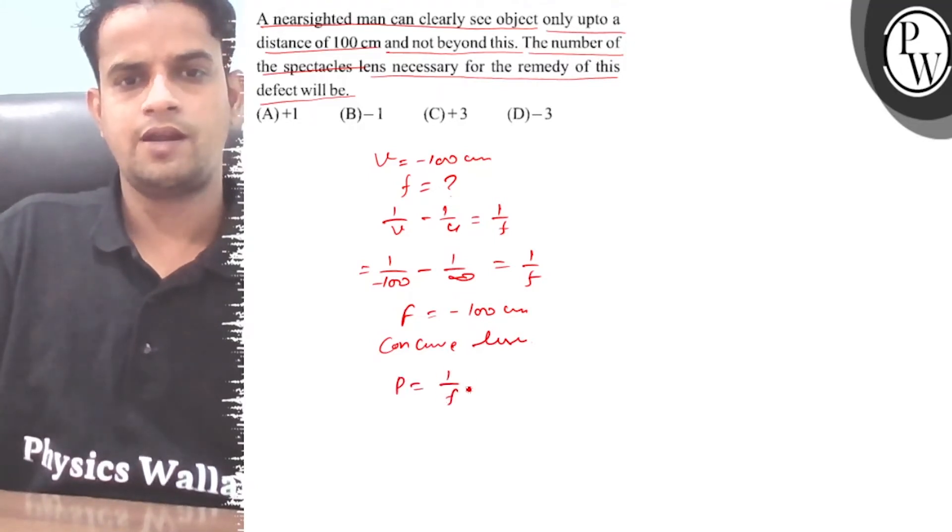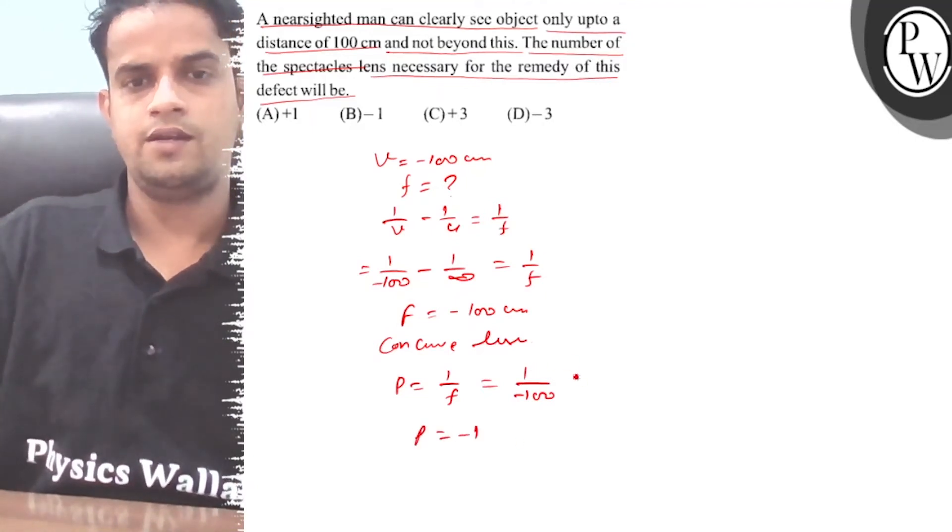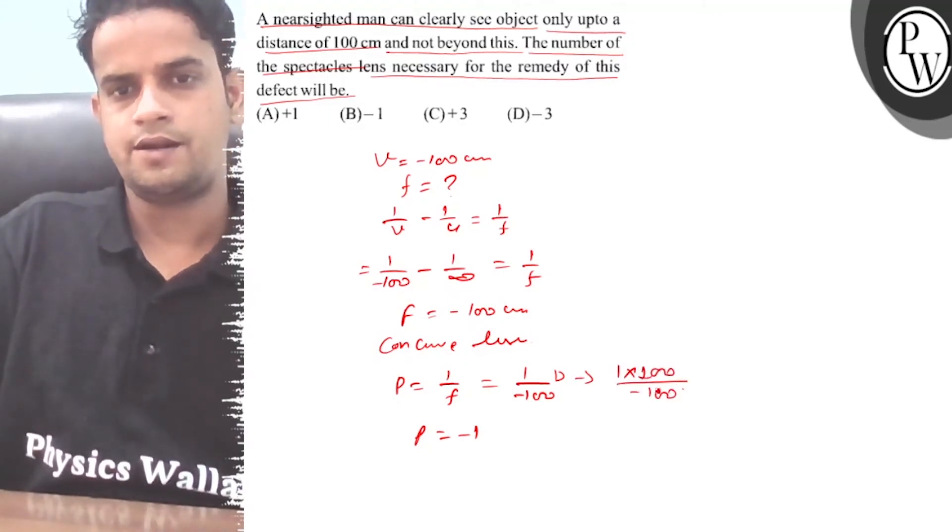P equals 1/F = 1/(-100). Converting to meters: 1/(-100/100) = 1/(-1). So P = -1 diopter.